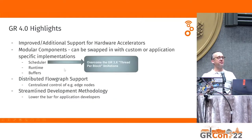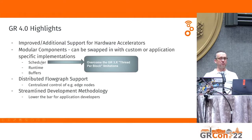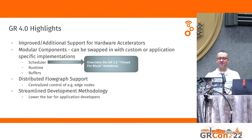Let's look at the current state of where the GNU Radio 4.0 dev branch is at. Highlights include improved support for hardware accelerators, modular components and the scheduler, an entry scheduler which gets over the thread-per-block limitation allowing multiple blocks in one thread, a modular runtime and buffers, hooks for distributed flow graph support, and a streamlined development methodology that removes a lot of the frustration around boilerplate when making new radio blocks.